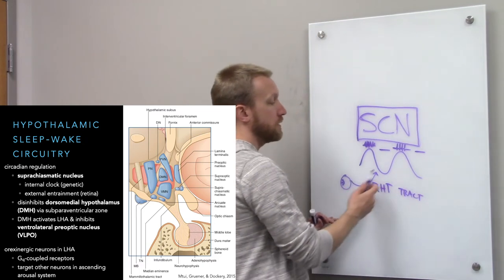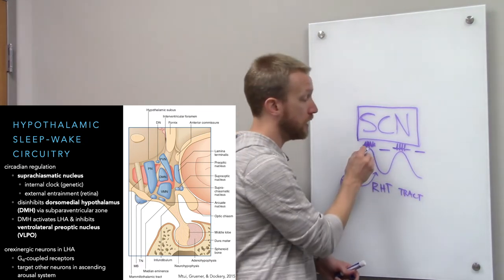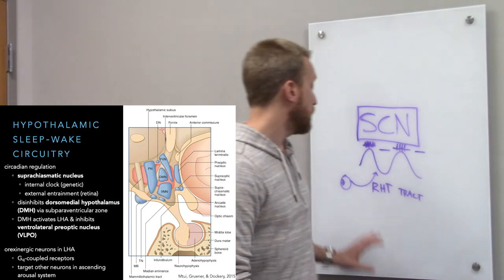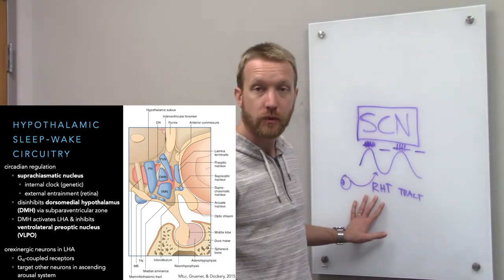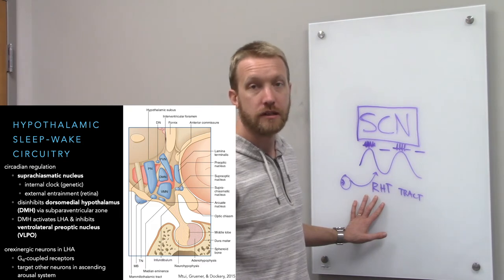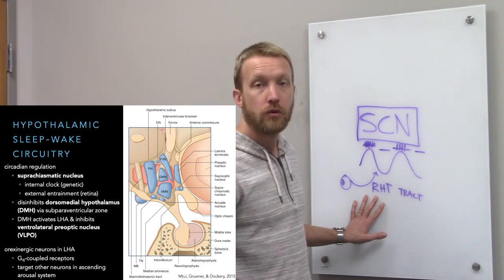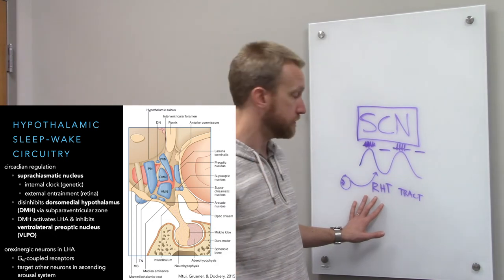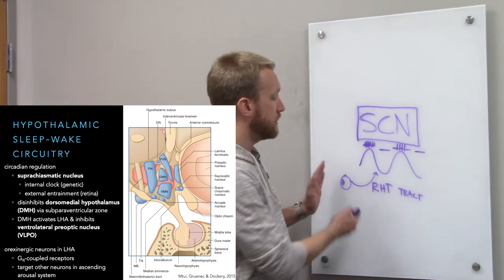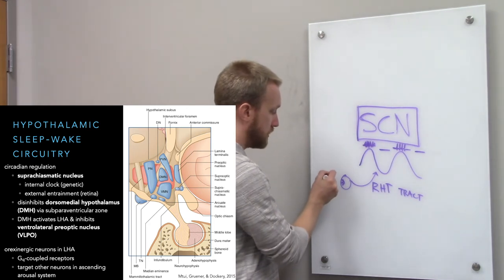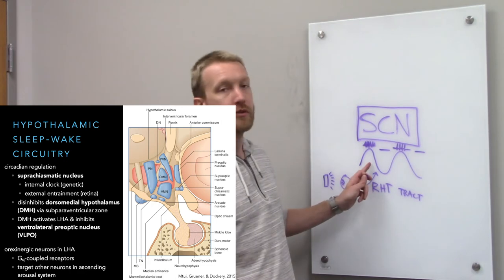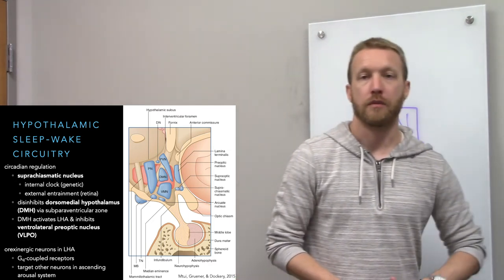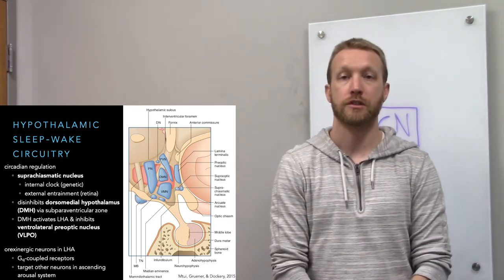The retinohypothalamic tract — from retina to hypothalamus — turns on the SCN when it's light. Those neurons are most sensitive to blue light, which is why night mode on electronic devices makes the screen look yellow: subtracting blue from white gives yellow. By providing less blue light, looking at a screen at night won't throw circadian rhythms off as much.